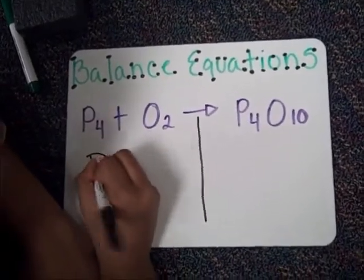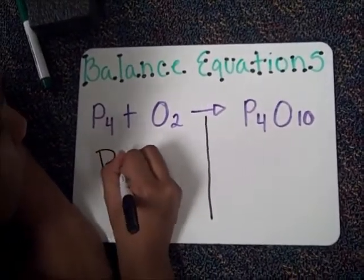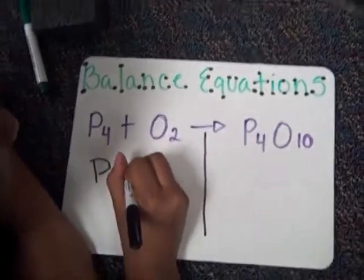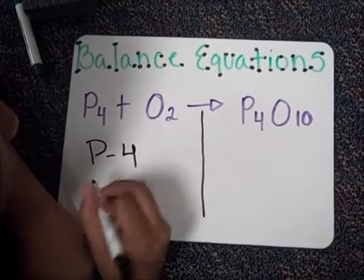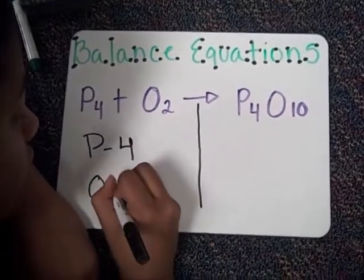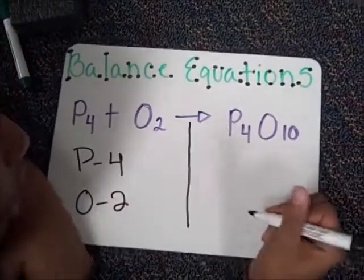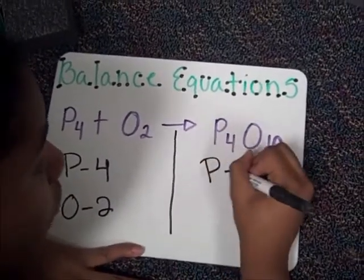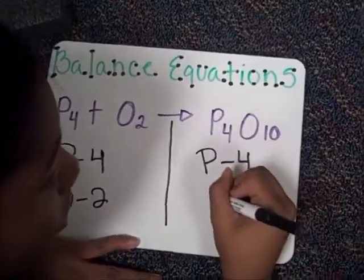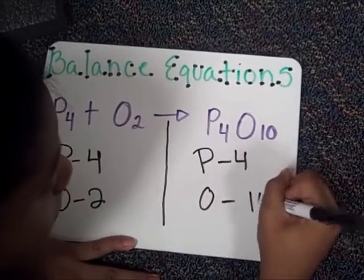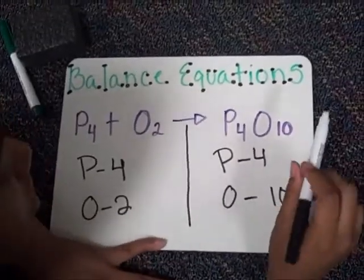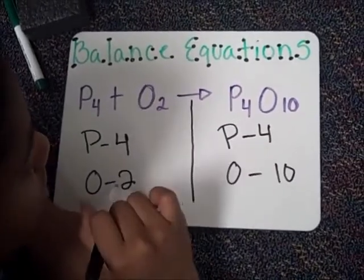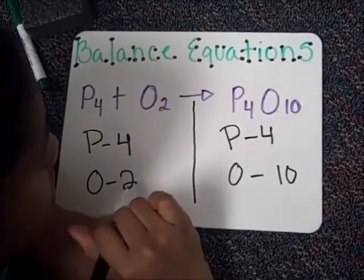And write out how many molecules are with each element. So P has 4, and O, which is for oxygen, has 2. And you would do the same on the opposite side. P has 4 here, and then oxygen has 10. And this equation is not yet balanced because the oxygens are both different. So you have to get this one to match that one or that one to match this one.